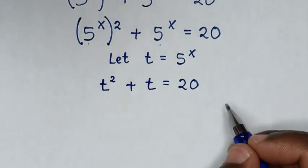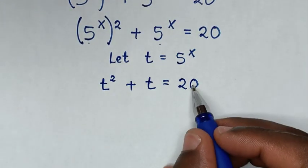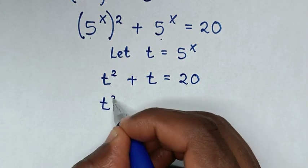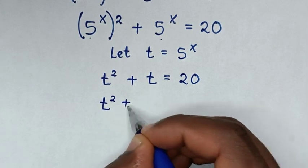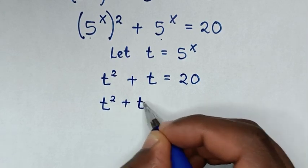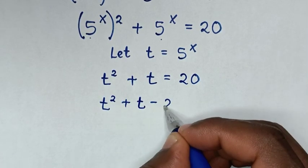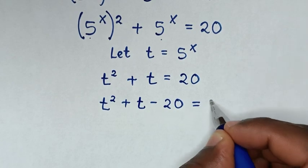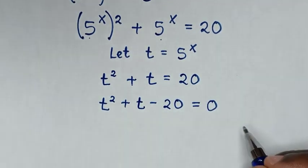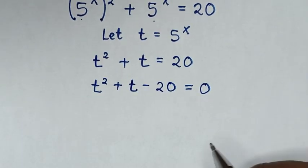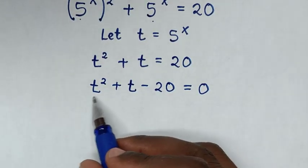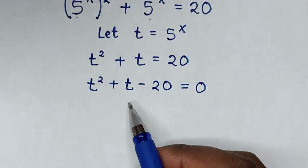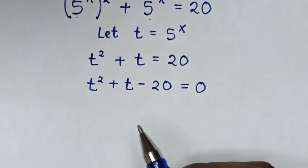Then we take this 20 to the left side. So it will be t squared plus t minus 20 is equal to 0. From this quadratic equation, we'll solve it by grouping and factorization.